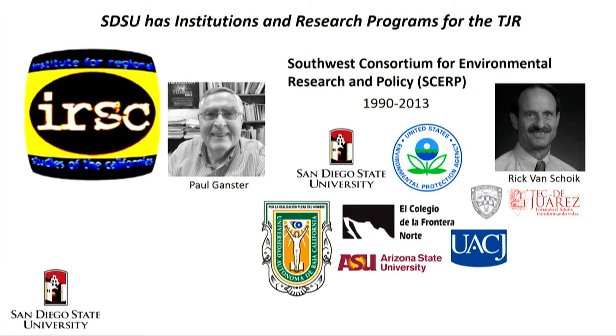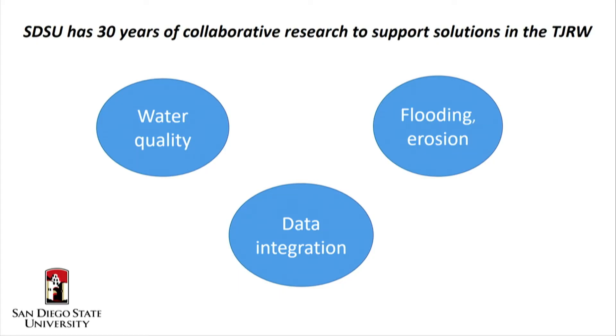One of the first successes of the IRSC was collaborating with the EPA to create the Southwest Consortium for Environmental Research and Policy, or SCERP. That was a 13-year program run by Rick Van Schoik that sponsored dozens of studies including those on water, involving universities on both sides of the border. Out of SCERP came seed and substantive money for 30 years of collaborative research. I'll be talking about three areas SDSU has been involved in: water quality, flooding and erosion — which even more directly kills people than water quality issues — and data integration.